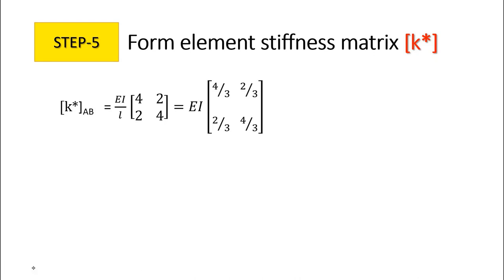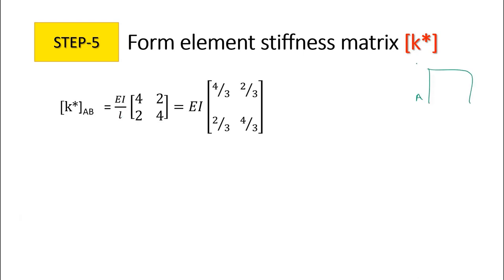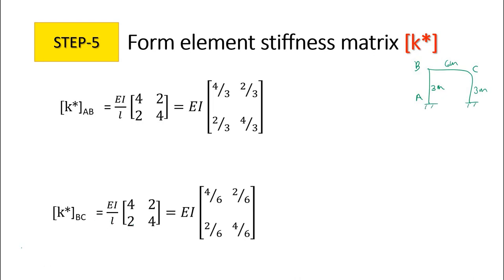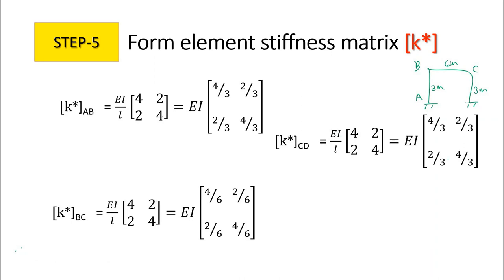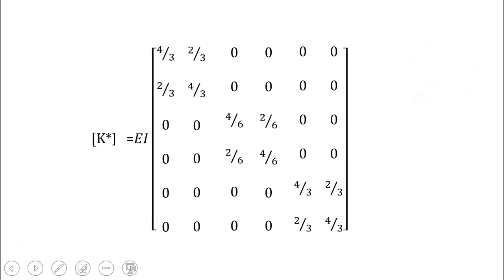Now we form the element stiffness matrices using EI/L times [4 2; 2 4]. The lengths are: AB = 3m, BC = 6m, CD = 3m. For BC, the matrix is EI/6 times [4 2; 2 4]. For CD it is EI/3 times [4 2; 2 4]. We then combine all elemental stiffness matrices diagonally to form the element stiffness matrix of the entire structure, K-star.